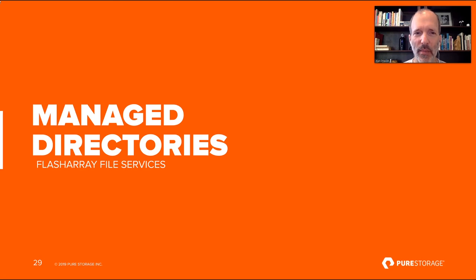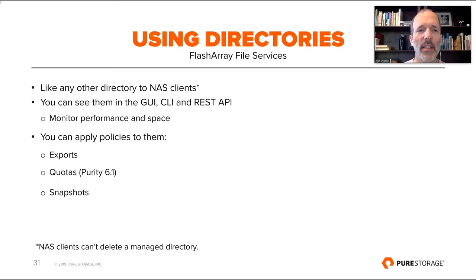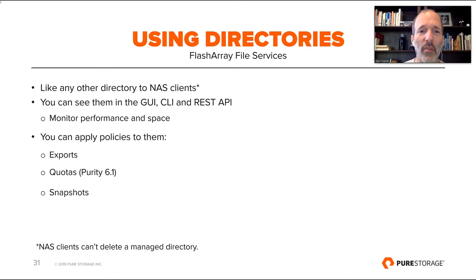Let's get more deeply into managed directories. The root of every file system is a managed directory, and you can create additional managed directories immediately below it. Purity 6.0 supports up to 500 managed directories per array. To a NAS client, these look like any ordinary directory, with the single exception that a NAS client can't remove a managed directory — because it's a directory that's important to the storage admin. What's different is that the storage admin can see these managed directories in the GUI, CLI, and REST API, monitor performance and space, and apply policies including export policies, snapshot schedules, and retention policies — and coming later this year, quotas.